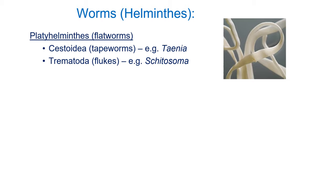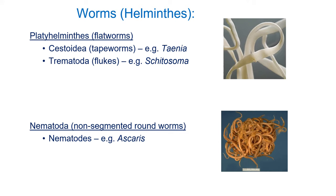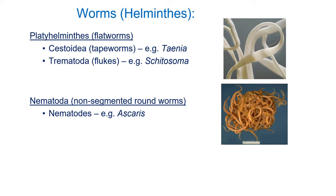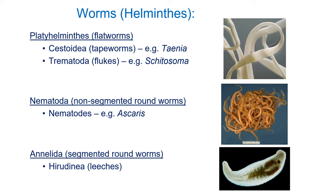Looking at the helminths or worms in more detail: first, we have the flatworms, made up of two subgroups. We have the cestoidea, which are the tapeworms — incredibly flat, almost paper thin — living within the intestine and soaking up food that you've already digested for them. Then we have the trematodes or flukes, which include a number of species that live throughout different organs of the body. Next, we have the nematodes; a good example is ascaris, a roundworm that infects more than 1.5 billion people worldwide. And then we have the annelids — the leeches — ectoparasites that draw blood from the body.